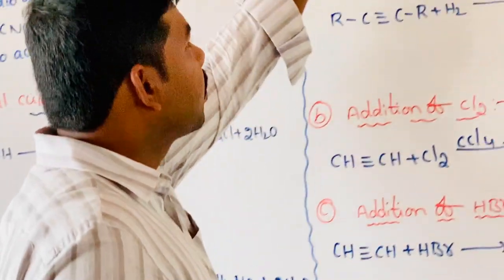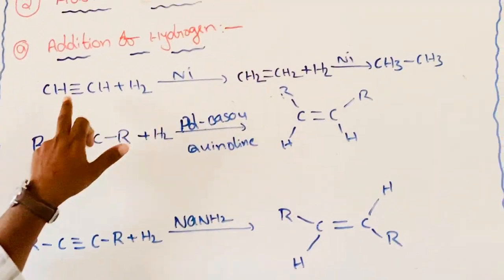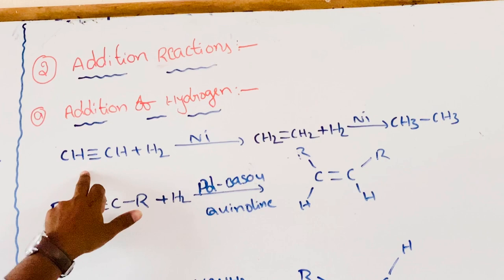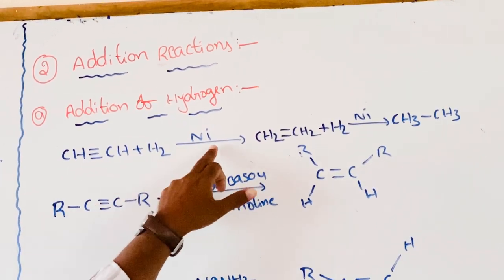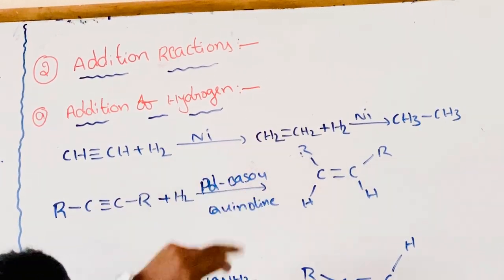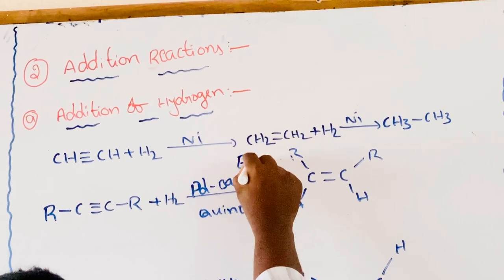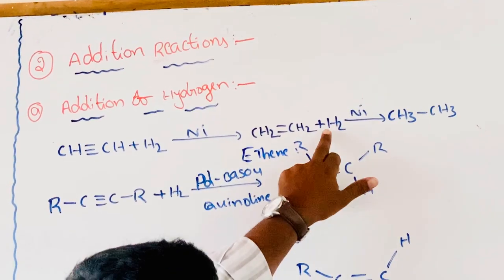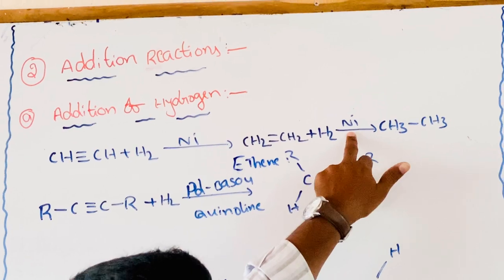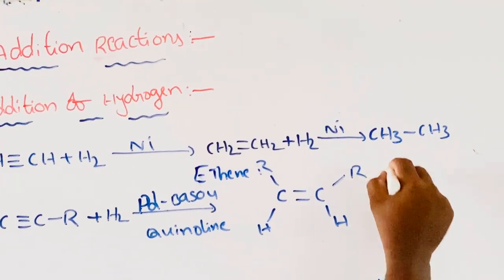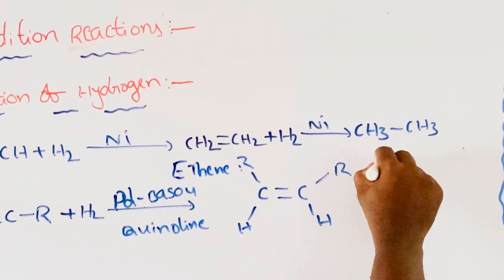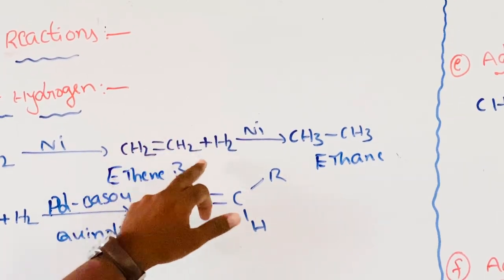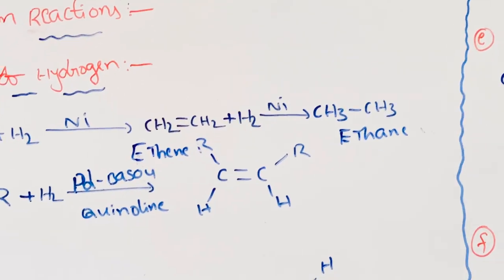Addition reactions. Addition of hydrogen: alkynes undergo hydrogenation — ethyne hydrogenation in the presence of nickel catalyst gives ethylene. This ethylene on further hydrogenation in the presence of nickel catalyst gives ethane. That is, alkynes are converted into alkenes, and these alkenes are further hydrogenated to give alkanes.